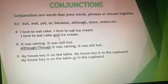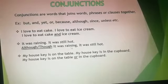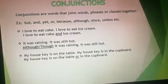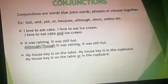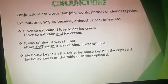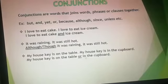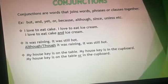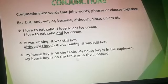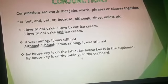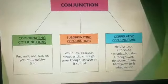In the first example, 'cake' and 'ice cream' — two words — were joined using 'and'. In the second example, 'it was raining' and 'it was still hot' — two clauses — were joined using 'although' or 'though'. And in the third example, two phrases 'on the table' and 'in the cupboard' were joined using the conjunction 'or'.